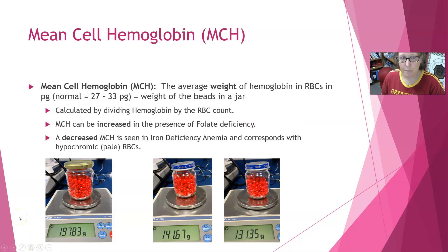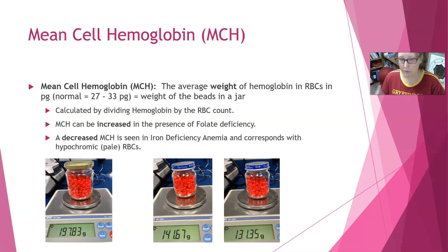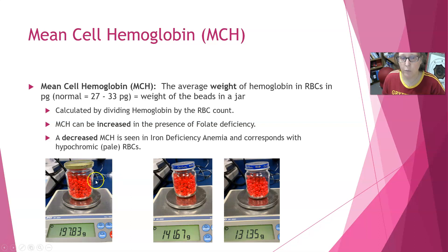Next we have the mean cell hemoglobin, or MCH. This is the average weight of the hemoglobin in the red cells, measured in picograms. In this illustration, it's the weight of the beads in the jar — the beads represent molecules of hemoglobin, and the jar represents the red cell. I weighed them here for demonstration. For example, a normal red cell with a normal amount of hemoglobin would have a corresponding weight.